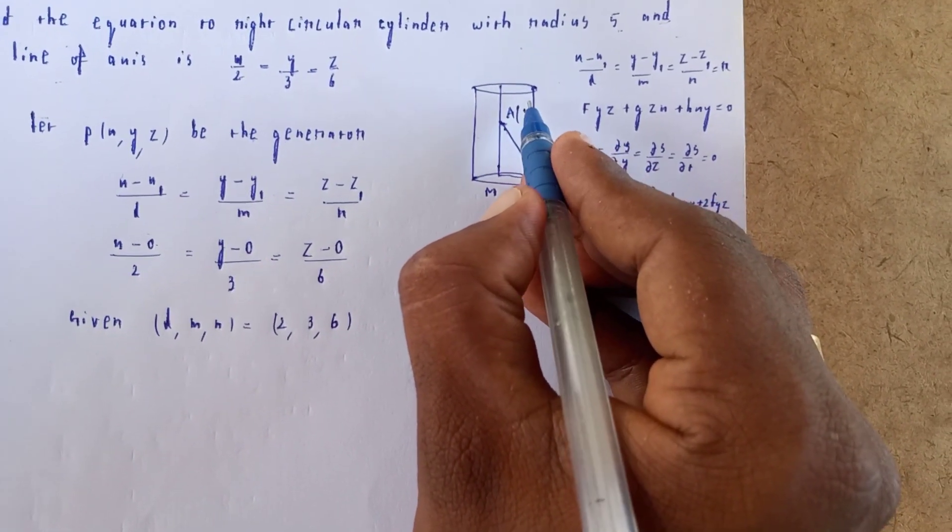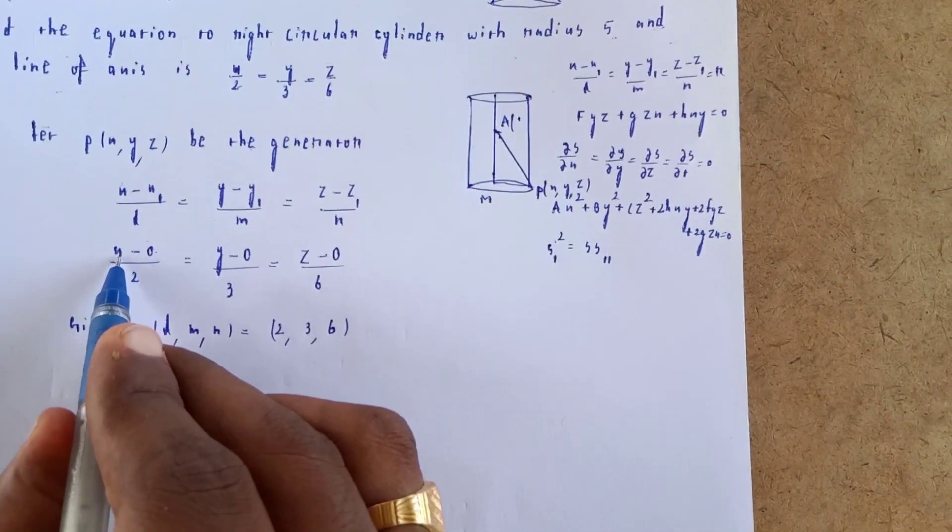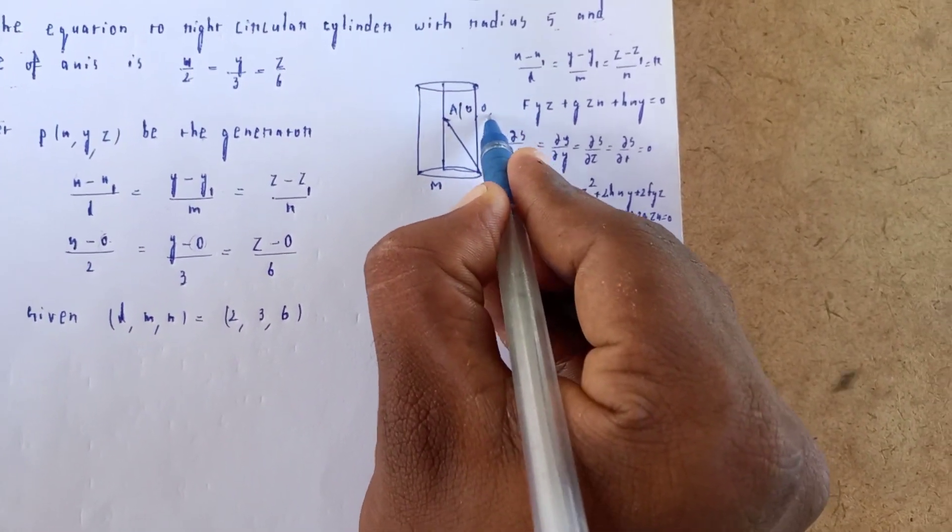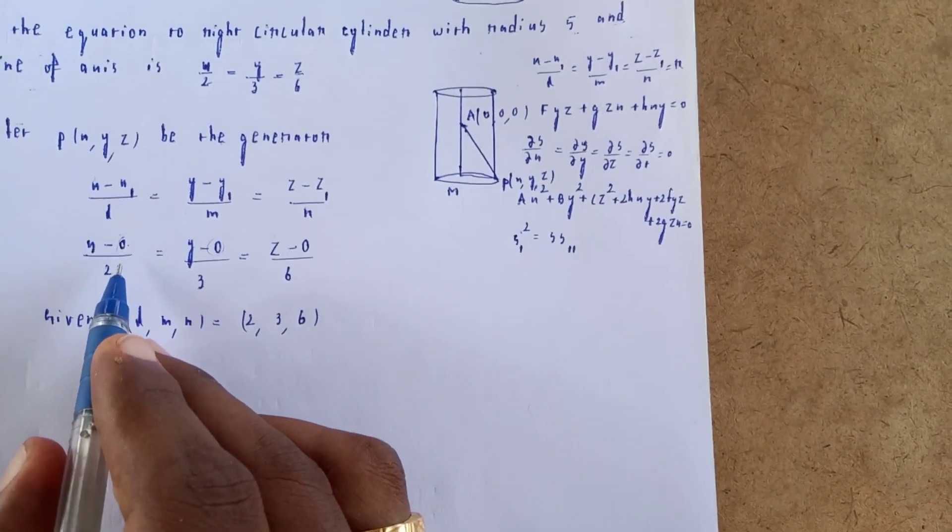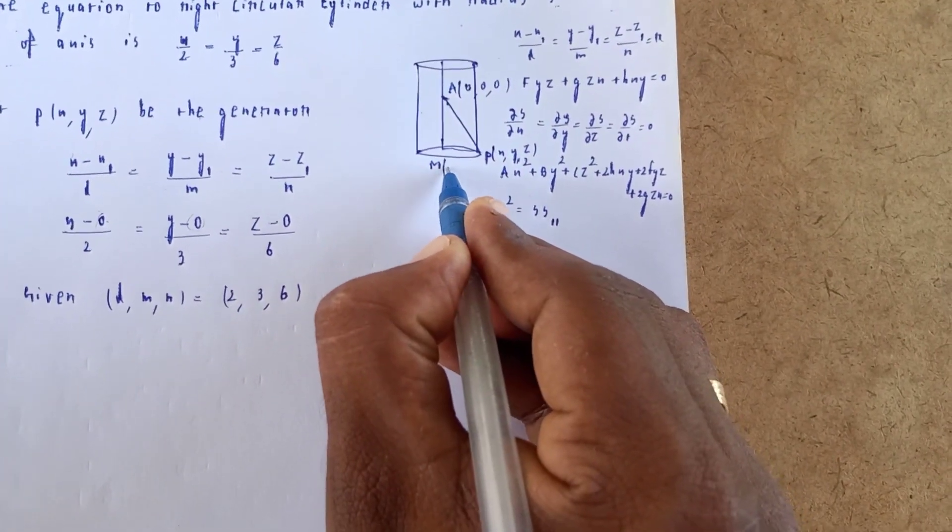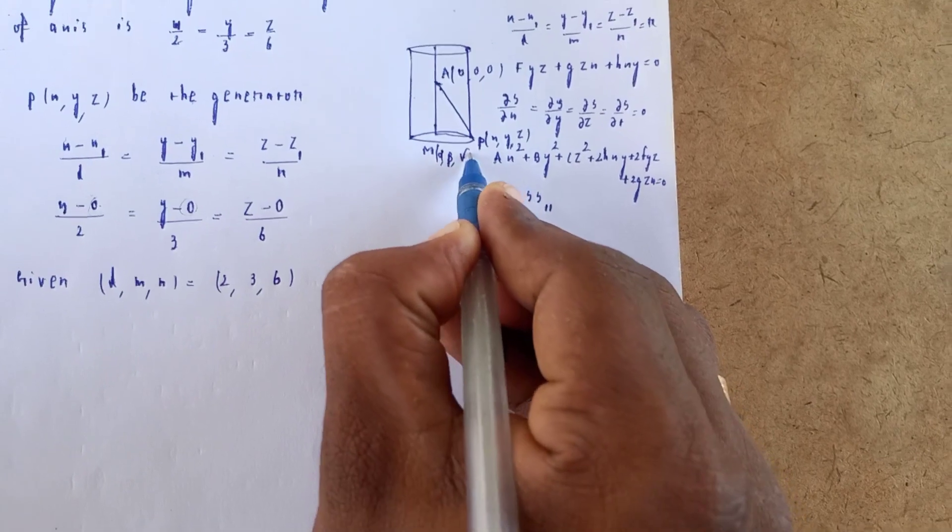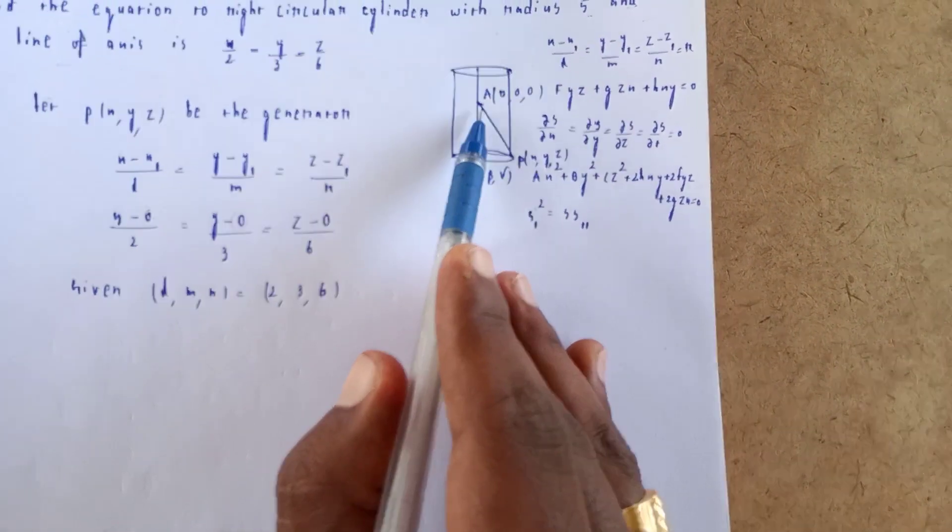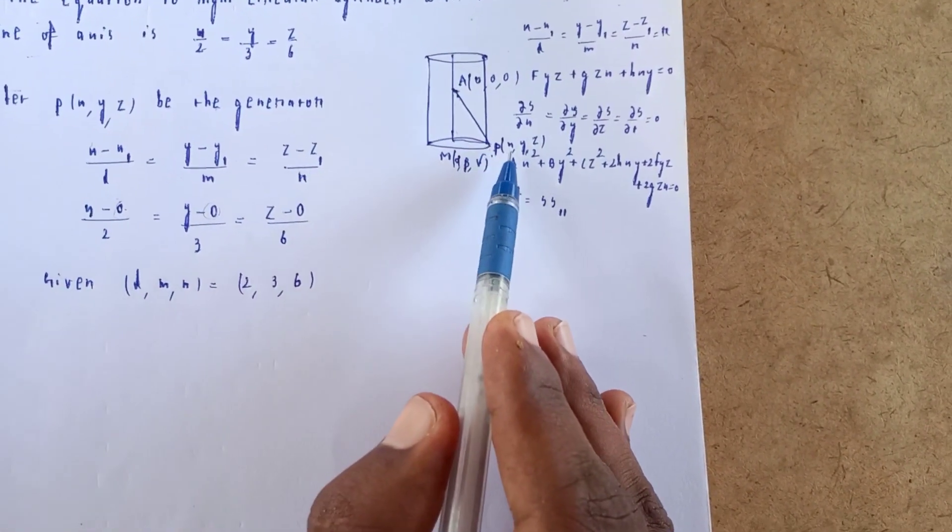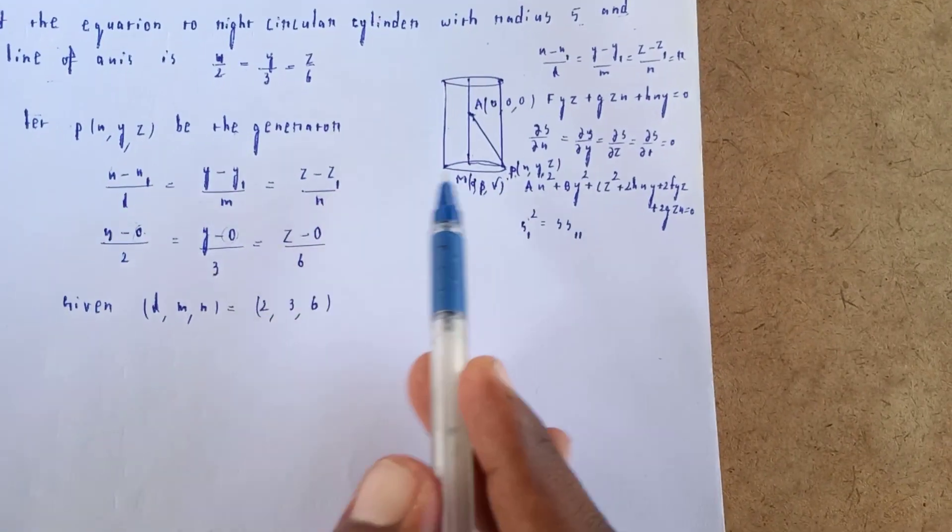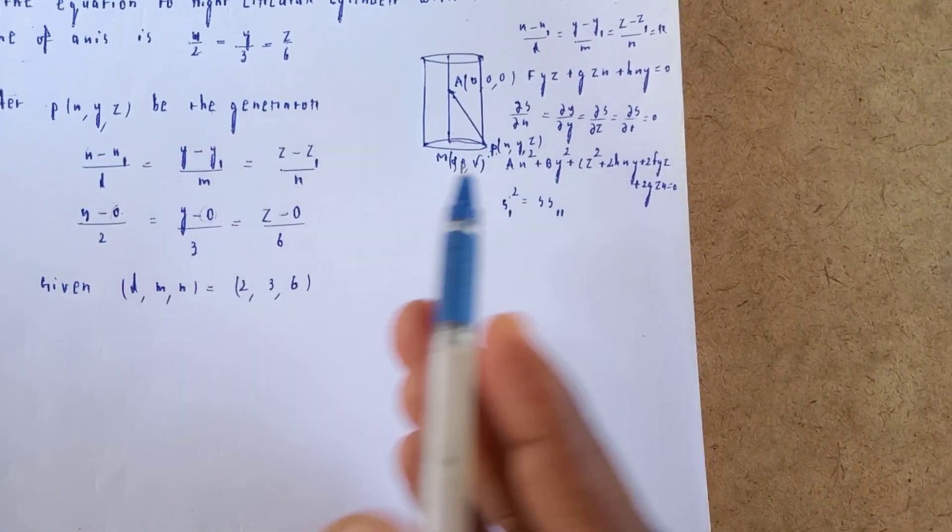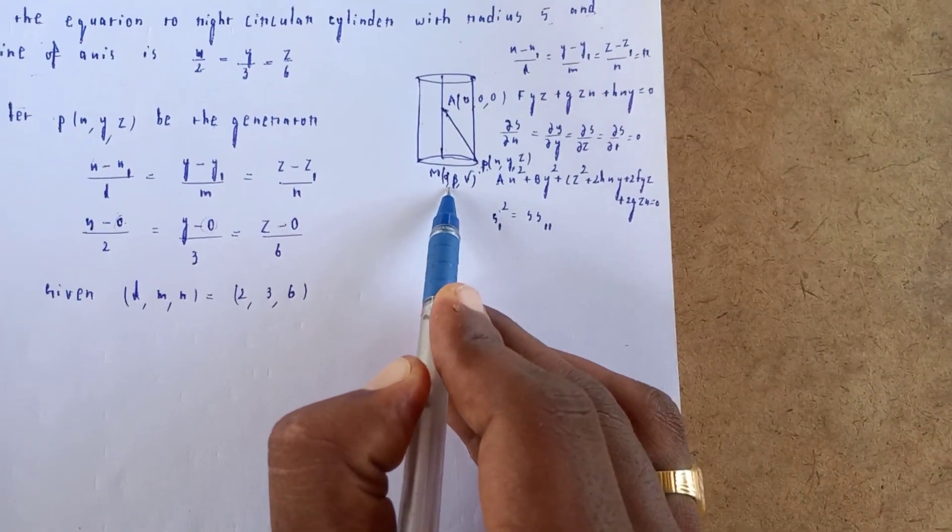X₁, Y₁, Z₁ is the point (0, 0, 0) and (α, β, γ) represents the direction. For a right circular cylinder, we have a triangle shape.